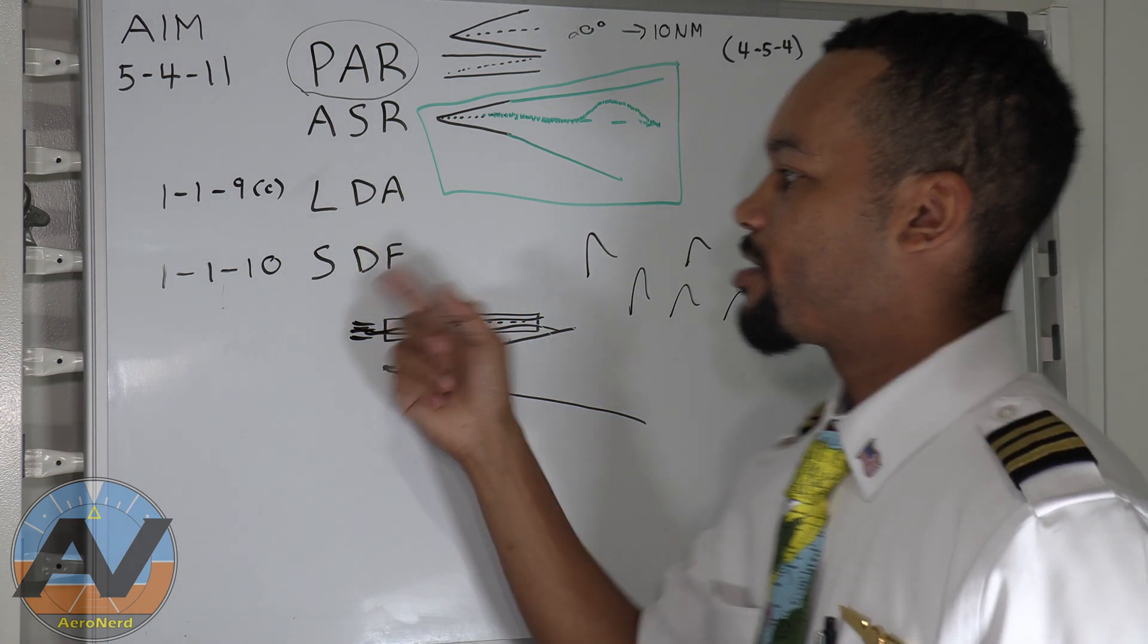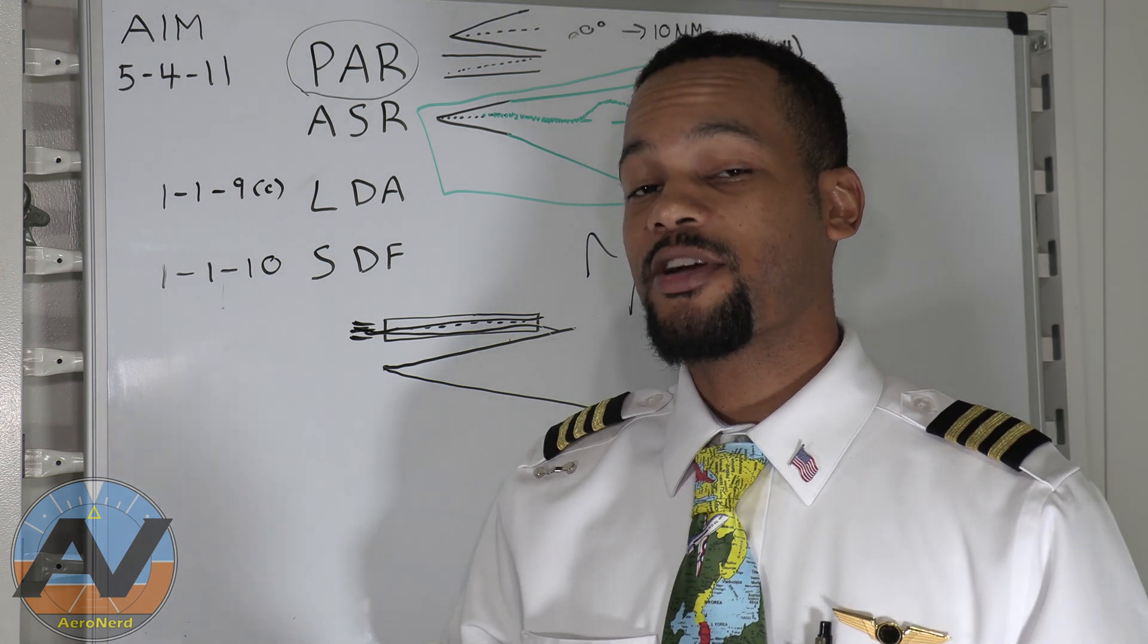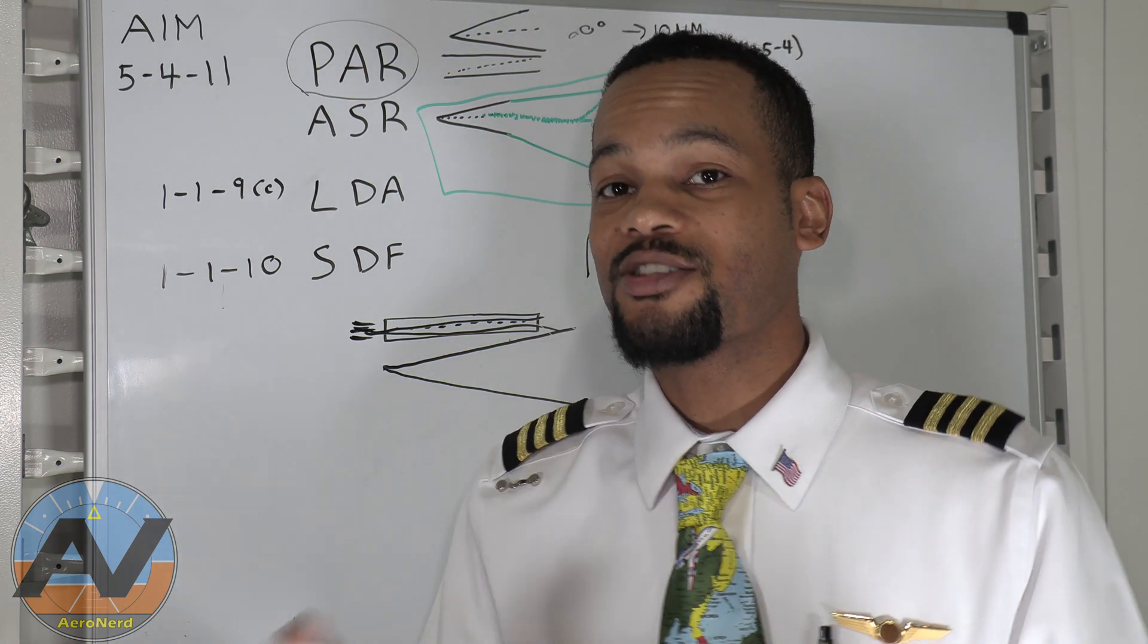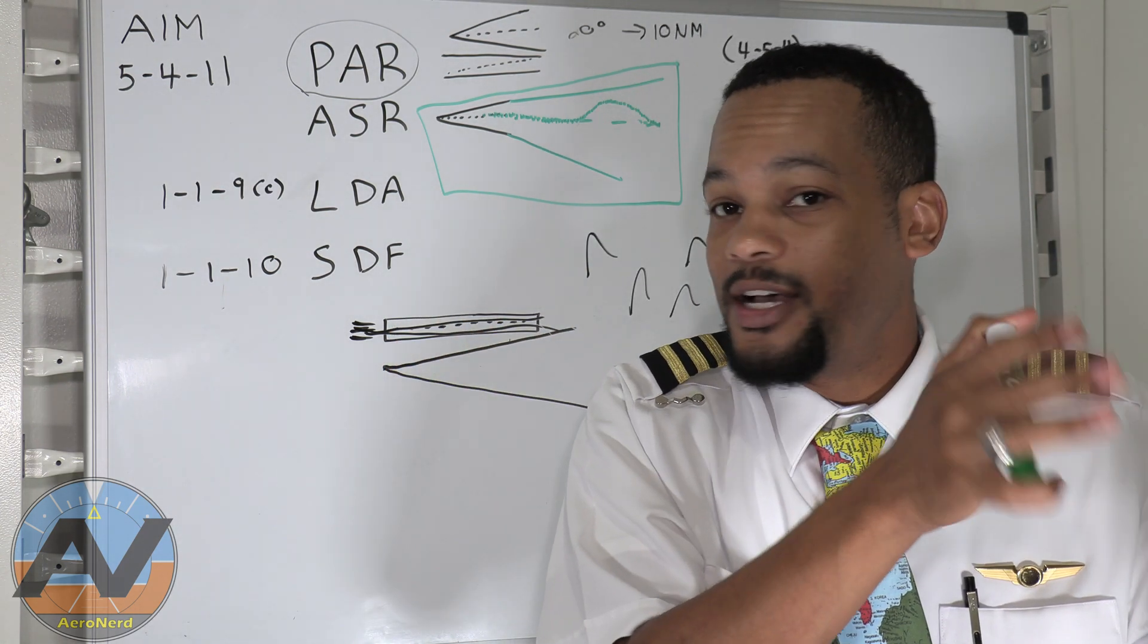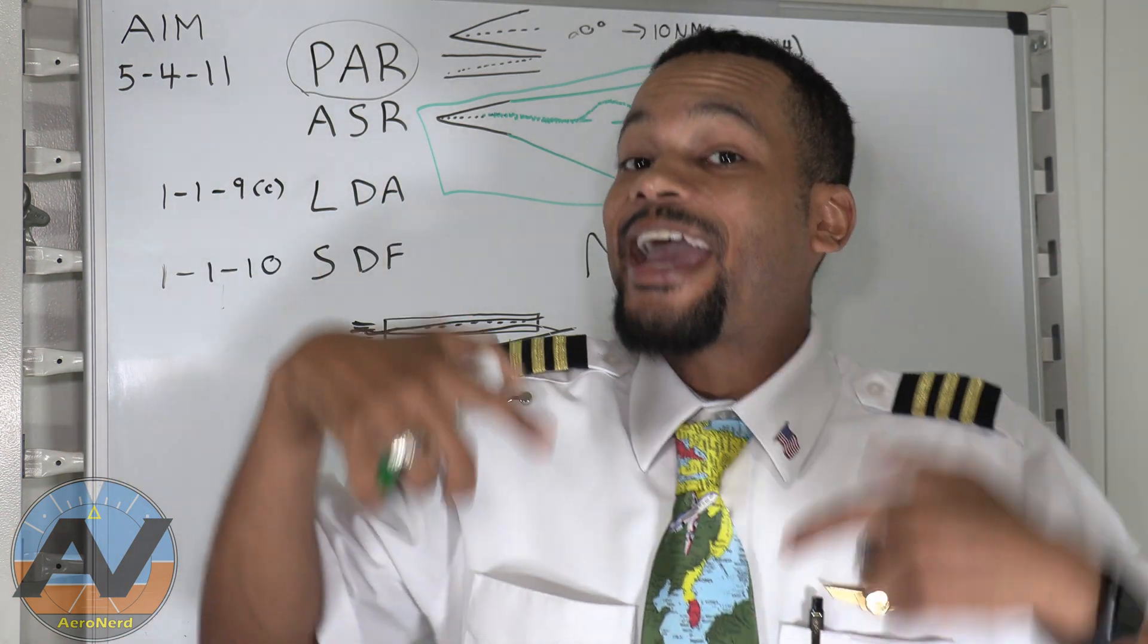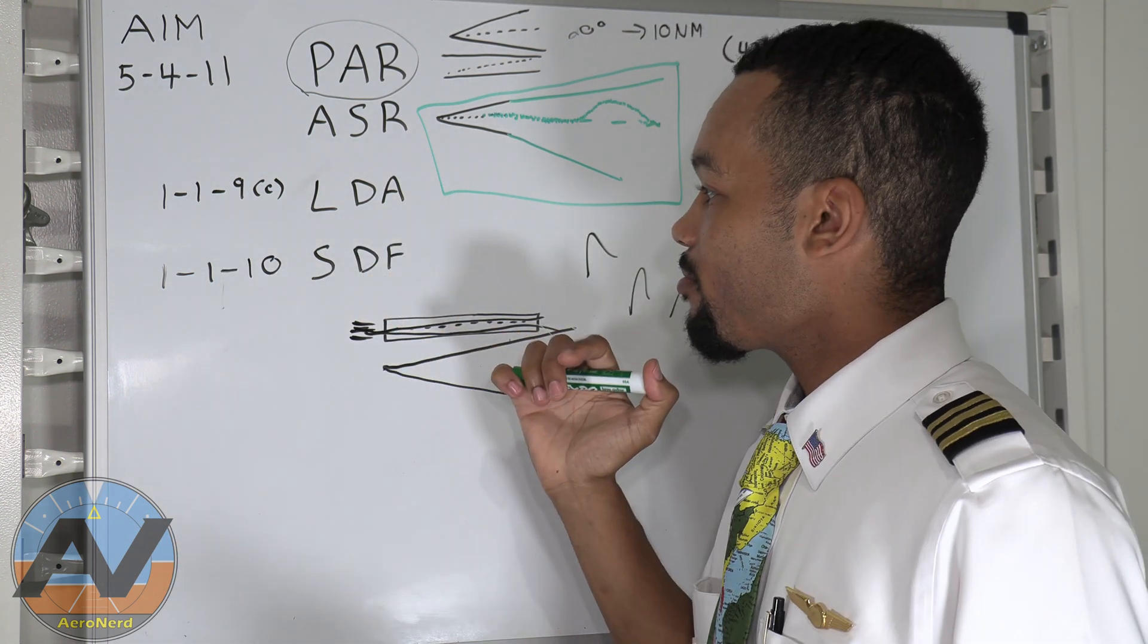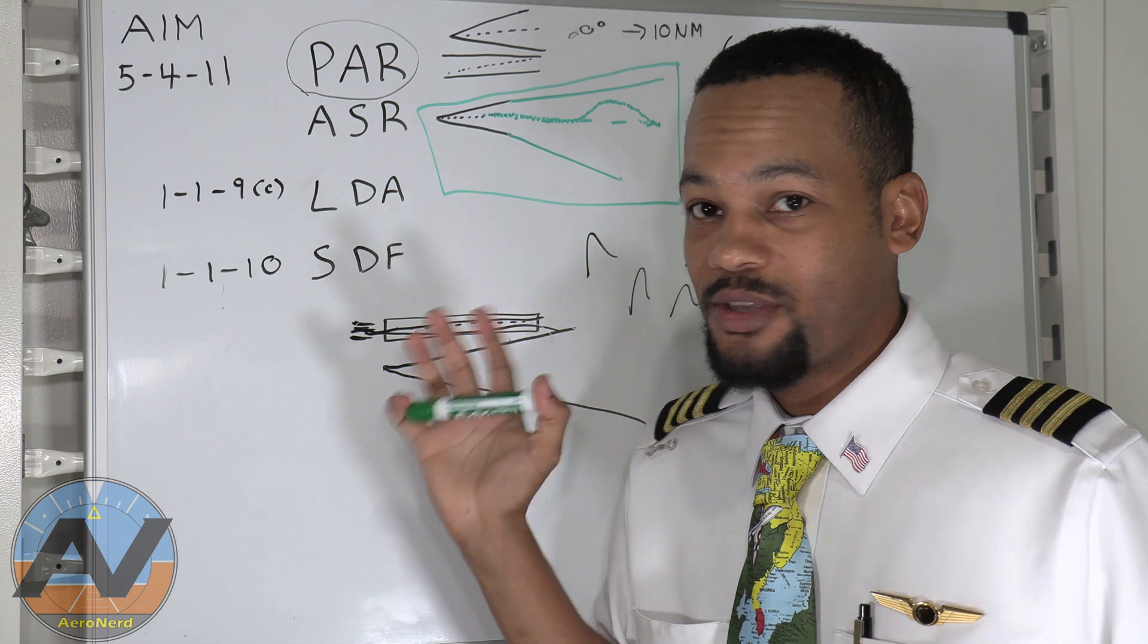Now, I'm going to LDA and Simplified Directional Aid. So, localizer directional aid and simplified directional facility are literally localizers that are offset from the runway. That's literally it. One may be a little bit more accurate than the other, and it may have a glide slope, which is localizer directional aid. That's literally the difference between these two in a nutshell.